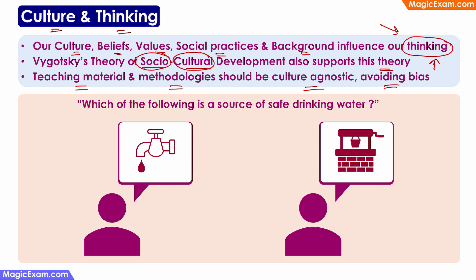For example, if I am from an urban background and I create an exam question — 'Which of the following is a source of safe drinking water?' — the correct answer I expect is TAP. But a child from a rural background taking the same exam might write that the source of safe drinking water is a well. From an urban background, TAP might be correct; from a rural background, well might also be a correct answer.